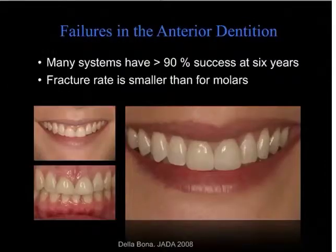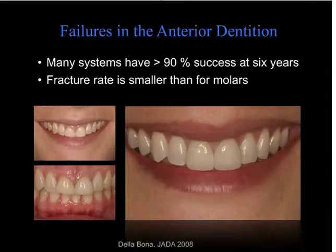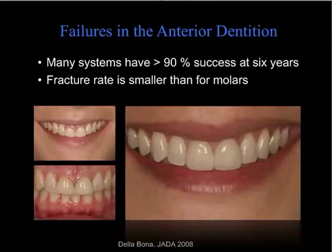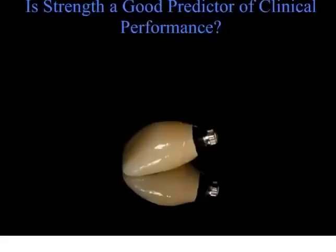Let's talk briefly about the failures of ceramics in the anterior dentition. Many systems have a greater than 90% success rate at six years. So perhaps a good starting point would be to ask this question.